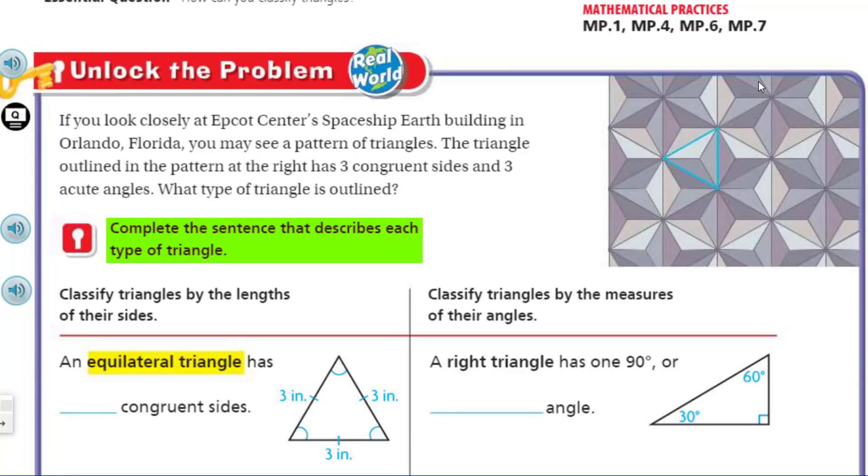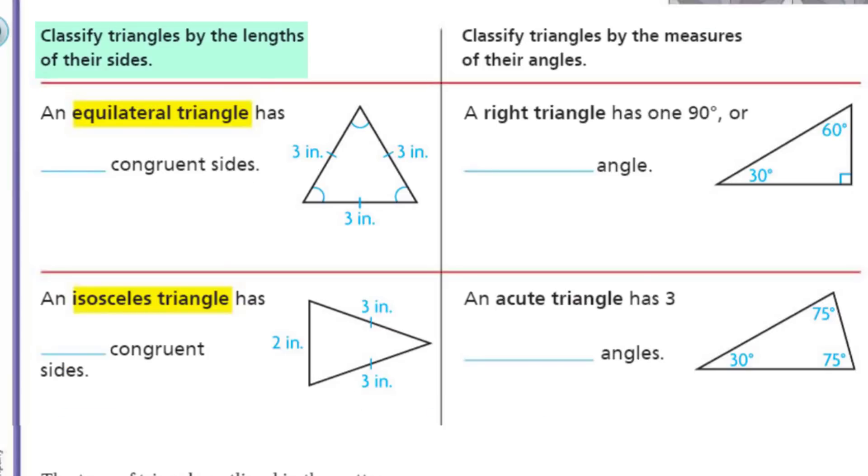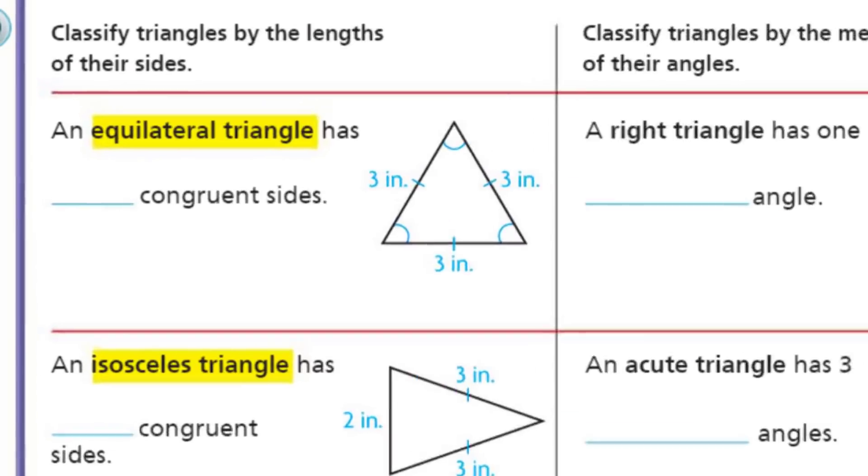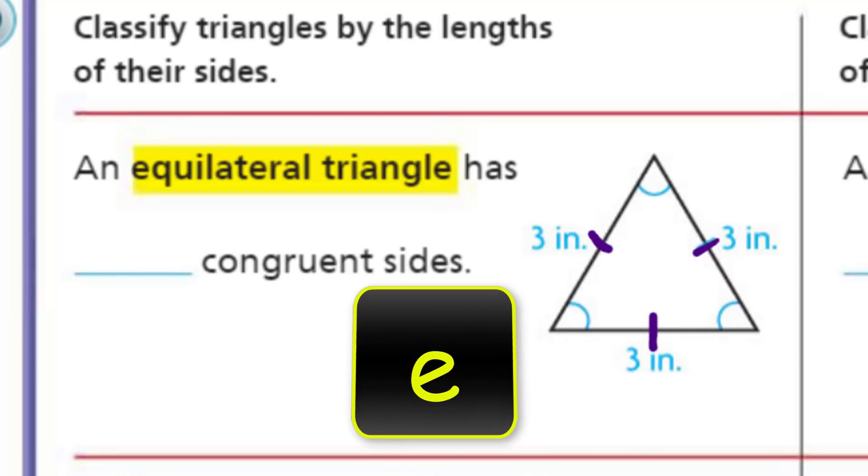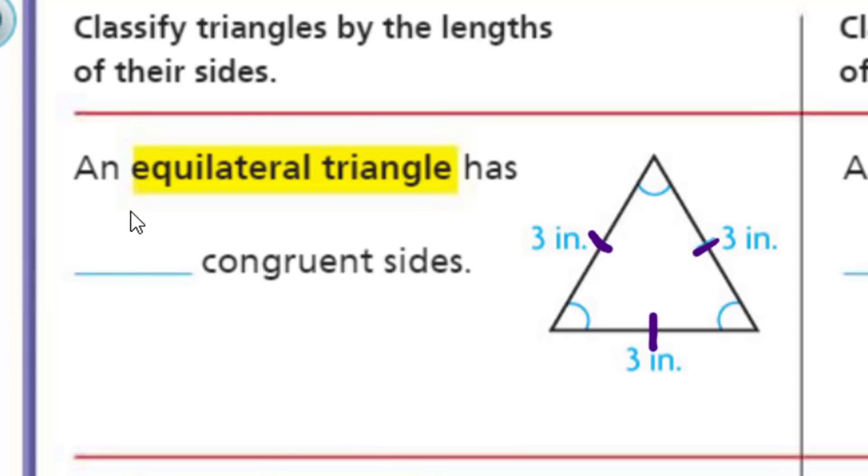It says complete the sentence that describes each type of triangle. Classify triangles by the lengths of their sides, and on the other side, we have classify triangles by the measures of their angles. An equilateral triangle has blank congruent sides. These lines let us know that each one of those sides are congruent, meaning the same. So it has three of them because it's a triangle.